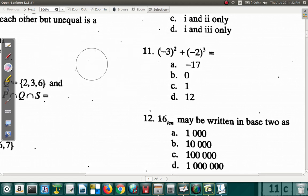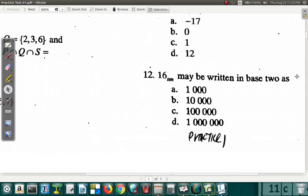Let's look at question 12 now. 16 in base 10 may be written in base 2 as. If you have 16 in base 10, you want to convert it to base 2. Now, first of all, 16 is 2 to the 4th.